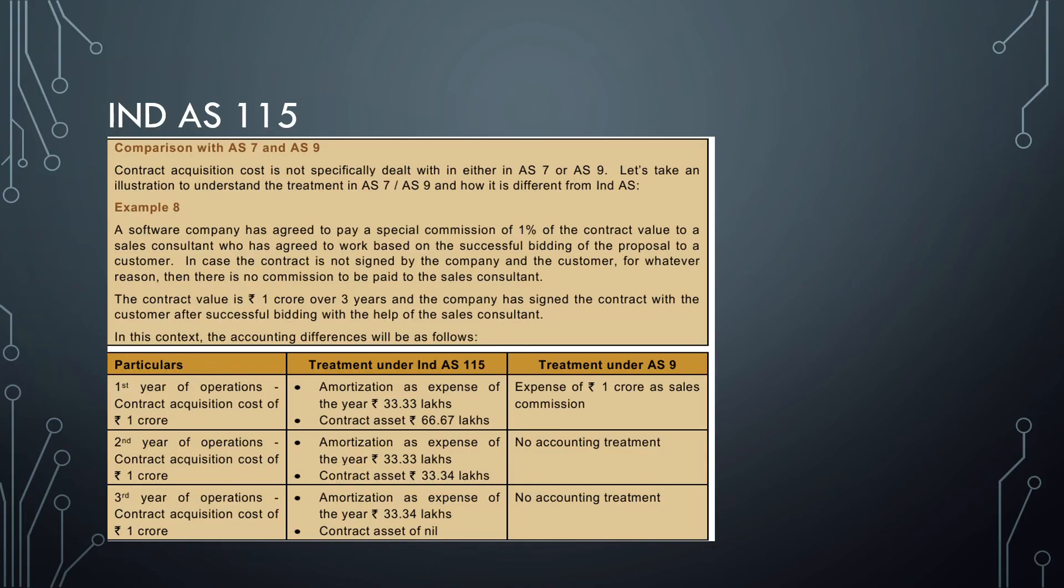The first one is IND AS 115. Comparison with AS 7 and AS 9 - contract acquisition cost is not specifically dealt with in AS 7 or AS 9, but in IND AS 115 it is specifically dealt with. Here's the example: a software company has agreed to pay a commission of 1% of the contract value to a sales consultant who has agreed to work on a successful bidding of proposal to a customer. In case the contract is not signed by the company and customer, there is no commission to be paid to the sales consultant. The contract value is Rs. 1 crore over 3 years and the company has signed the contract with the customer after successful bidding with the help of the sales consultant.